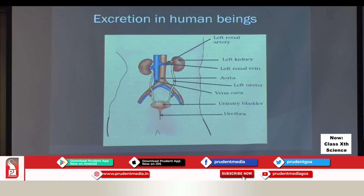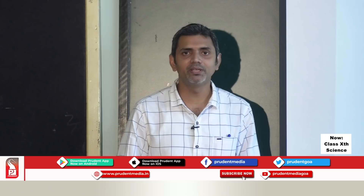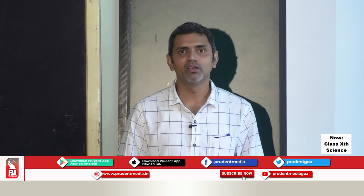Let us study the excretory system in human beings. It has four main parts: kidneys — left kidney and right kidney — ureters, urinary bladder, and urethra. The left renal artery carries blood in which nitrogenous waste like urea is present. The kidney removes nitrogenous waste from the blood. Kidney performs two main functions: it removes nitrogenous waste from blood and it regulates the amount of water in our body.